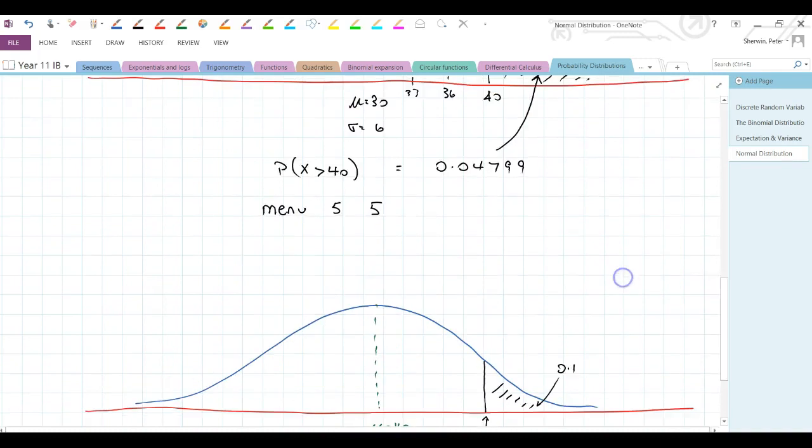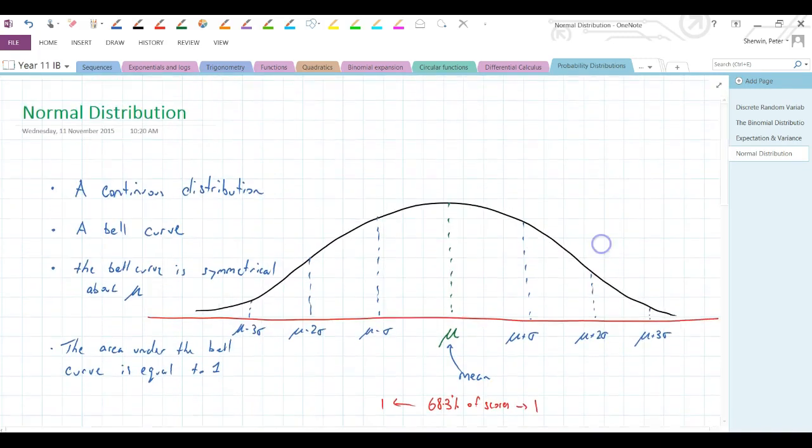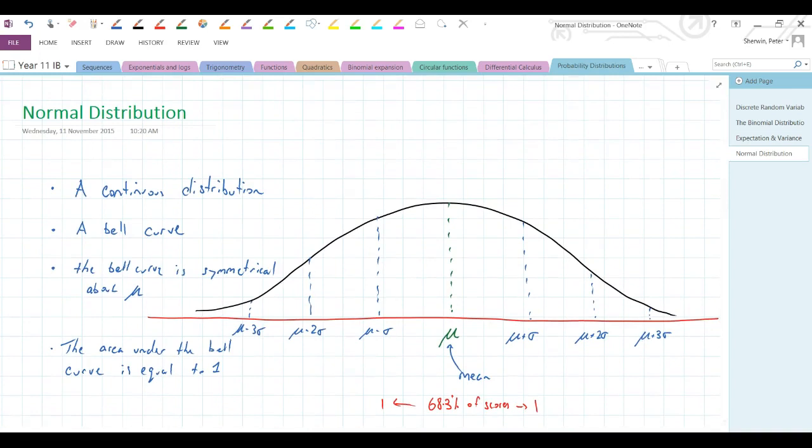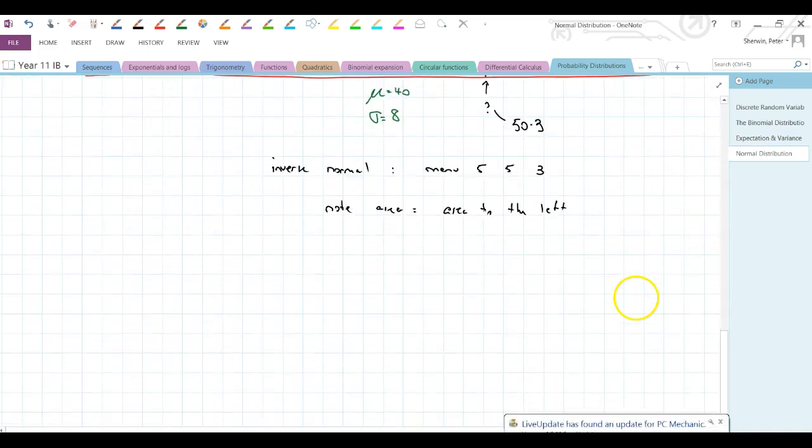So that's how to maneuver around. I've already used up 14 and a half minutes of your precious time, so I'm going to stop there. There will be another screencast on how to use the standard normal distribution, but I'll post that very shortly.